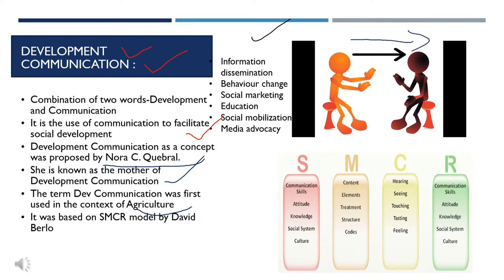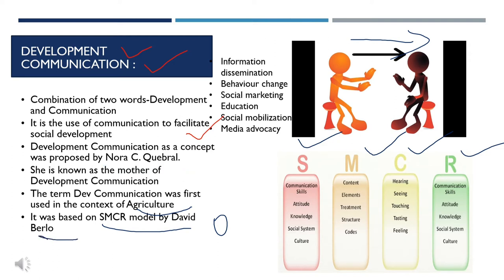In the initial stages of development communication, mass media were considered as a powerful tool that can penetrate into the minds of people. Audiences were passive with zero feedback and are ready to accept whatever is delivered. It is based on the sender-message-channel-receiver model — the famous SMCR model proposed by David Burlow.